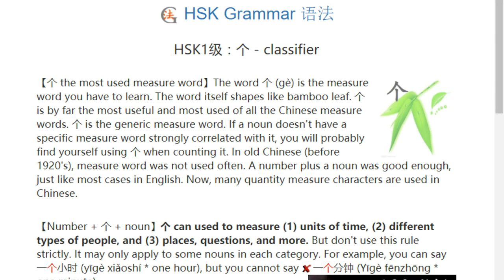Welcome to HSK Grammar. 我是老许, HSK 一集. The classifier 个 is the most used measure word in Chinese. The word 个 is the major word you have to learn. The word has a shape like a bamboo leaf.